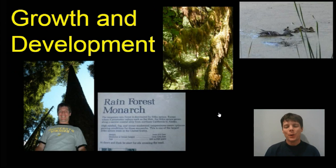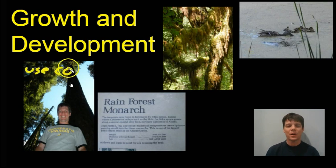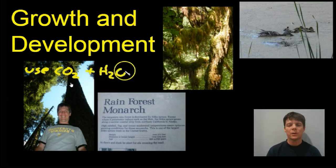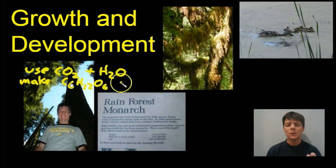The next trait we're going to look at is the fact that living things grow and they show development. Here we're seeing a number of examples of different living organisms. This is a Sitka spruce — I took this picture in Washington State. The spruce is an example of an organism we call a producer. Producers are organisms that carry out the process of photosynthesis. They use carbon dioxide (CO2) and water (H2O) to make glucose (sugar).